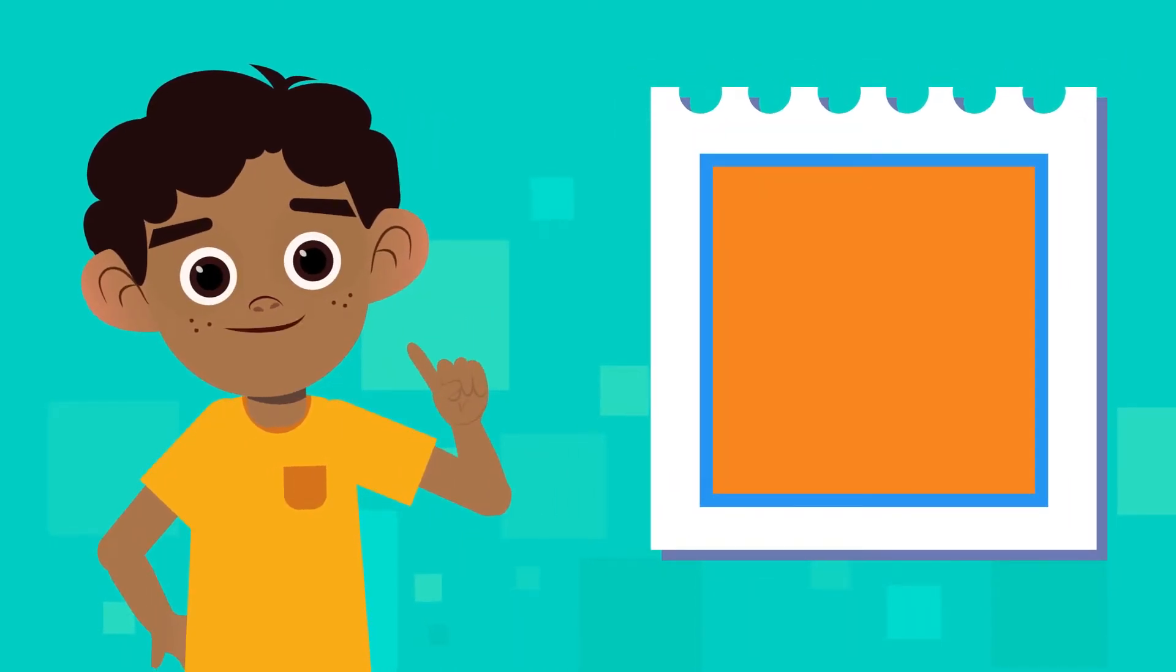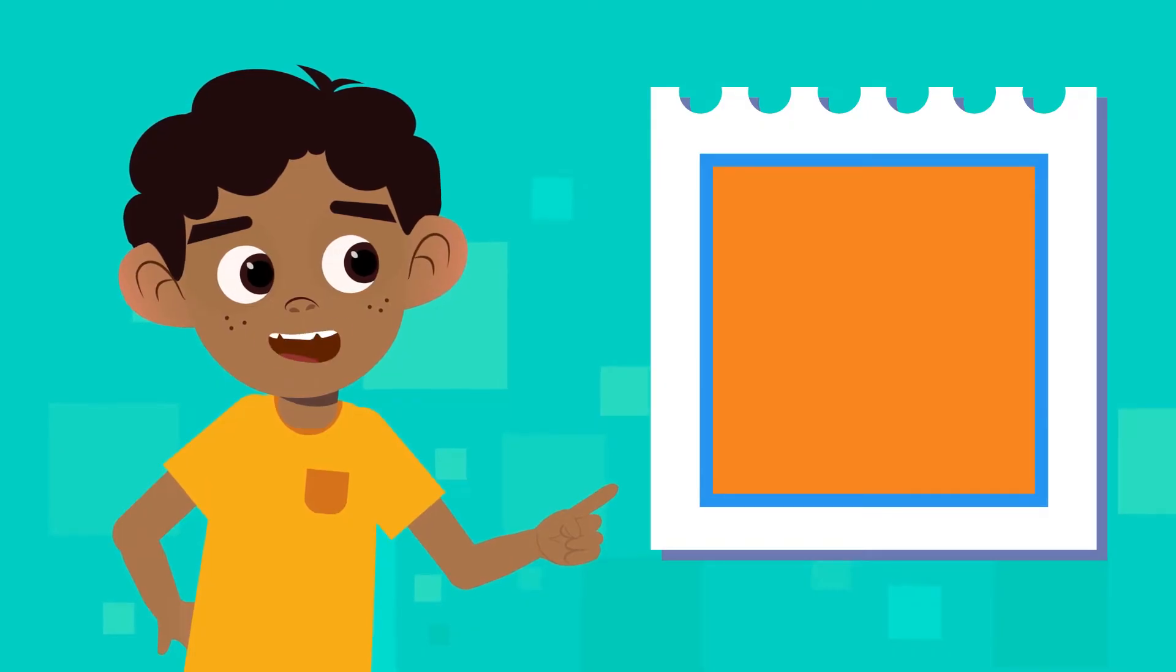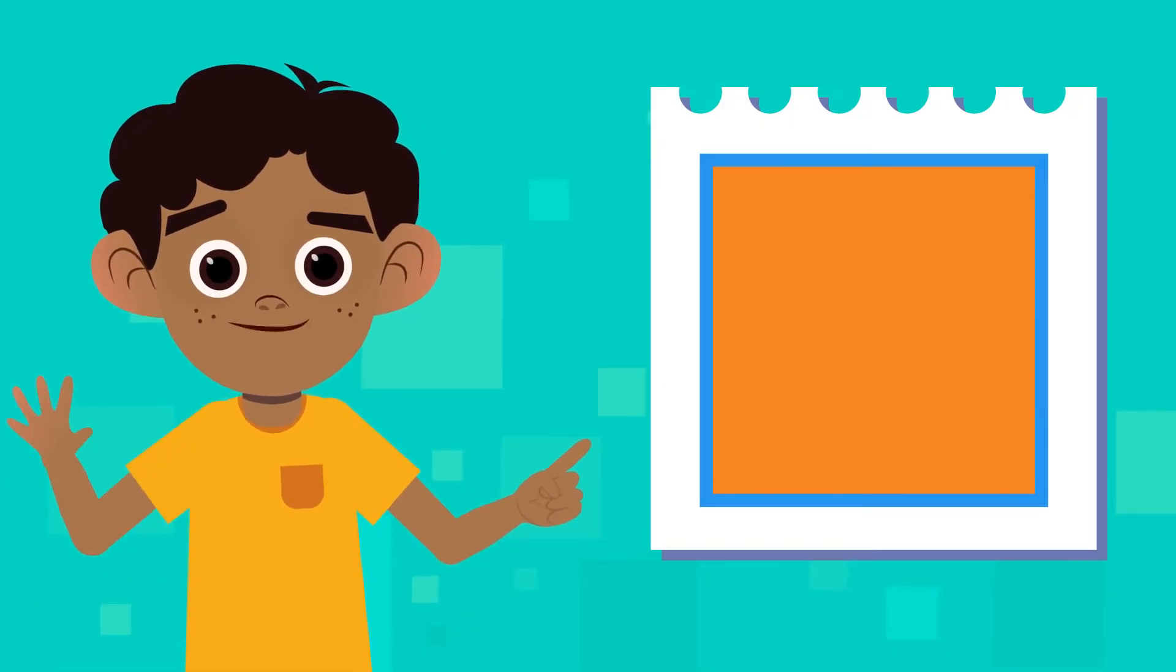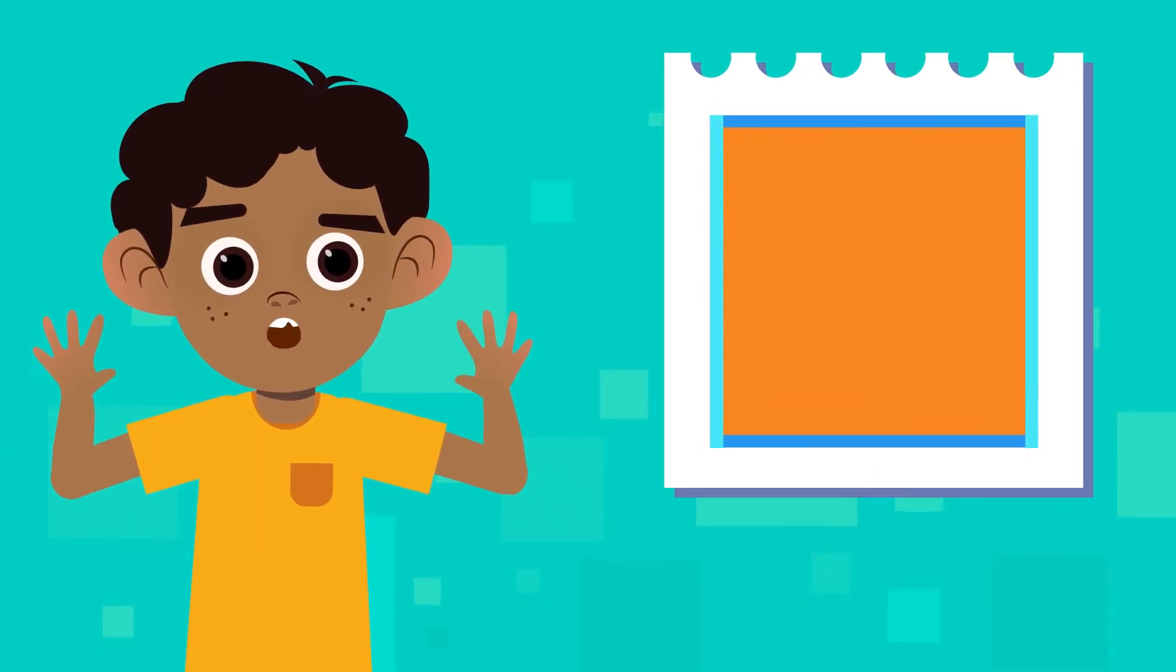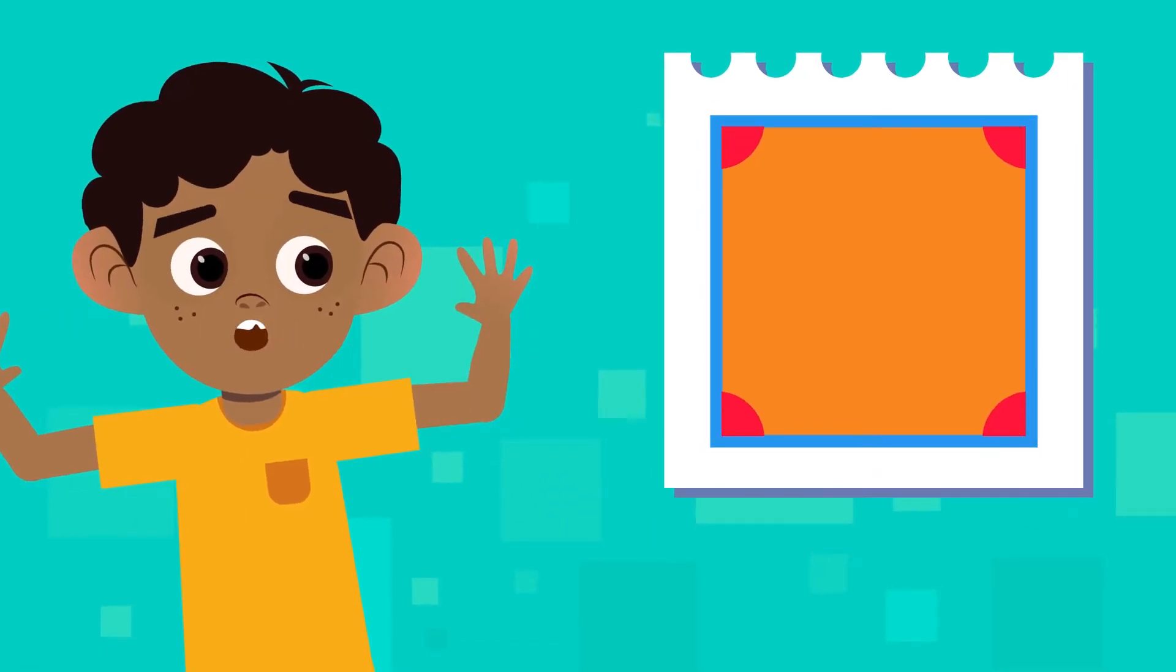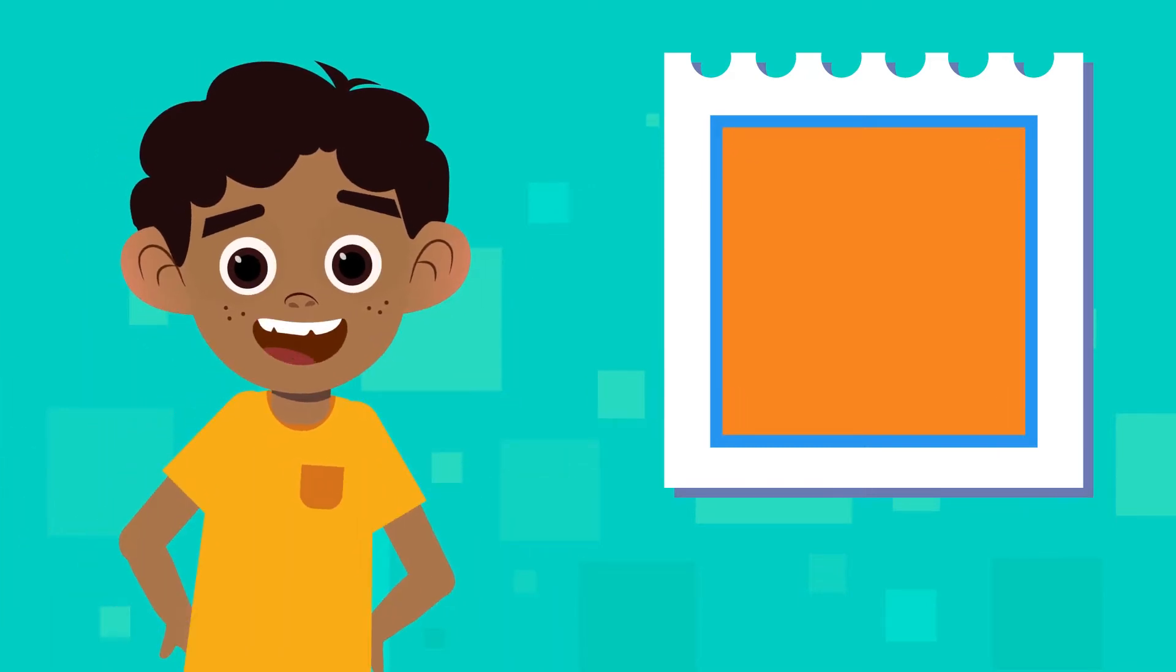Before we start, let's recap what a square is. A square is a plane figure with four equal sides that are parallel to each other and it has four right angles. That's why we say a square is a regular polygon.